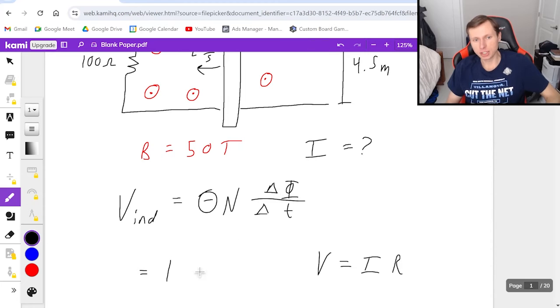Then the delta flux part, remember delta flux is magnetic field times area final minus magnetic field times area initial divided by time. And one more thing I'll say,